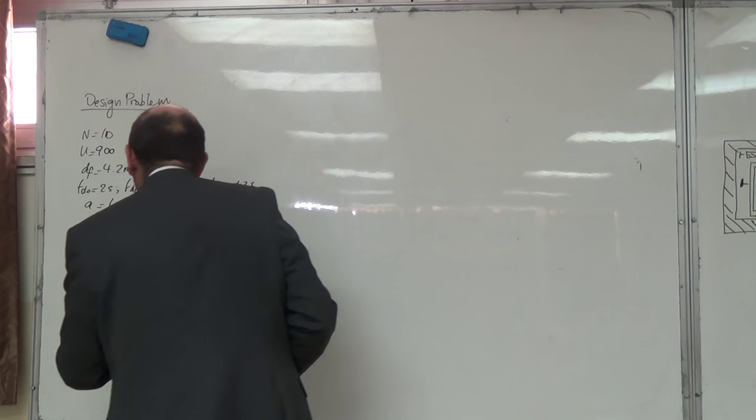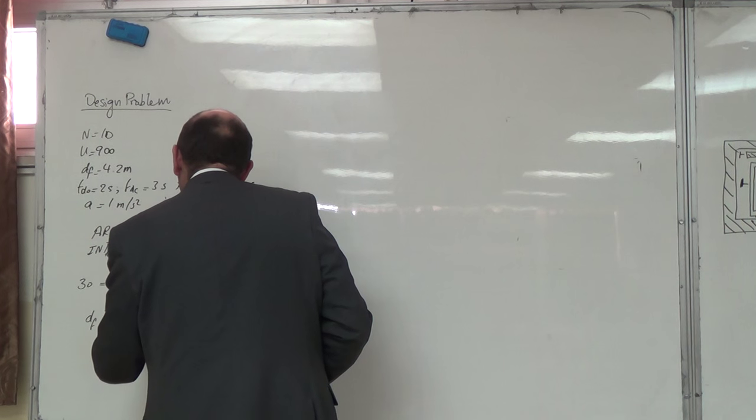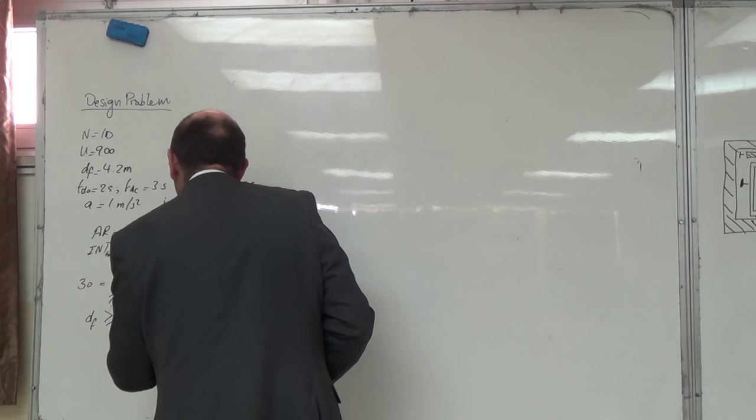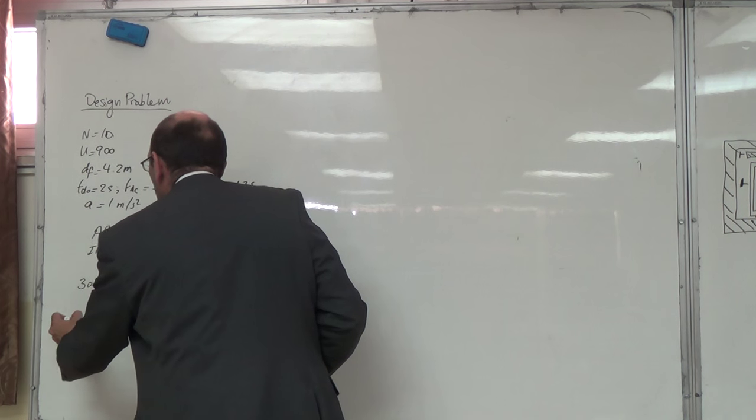D_f اللي هي 4.2 اللي هتكون أكبر من أو يساوي A square على B 1.6 زائد B square على J على واحد في واحد وهي تساوي 4.16 meters. إذن هاي صحيح لأنه هاي 4.2 meters.